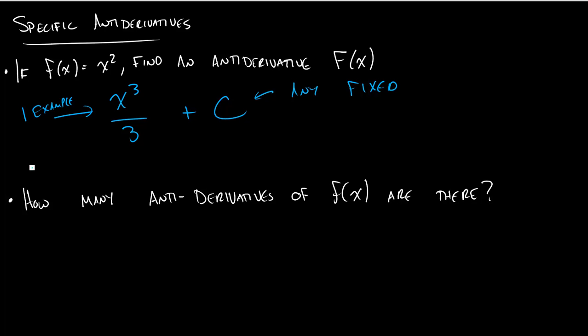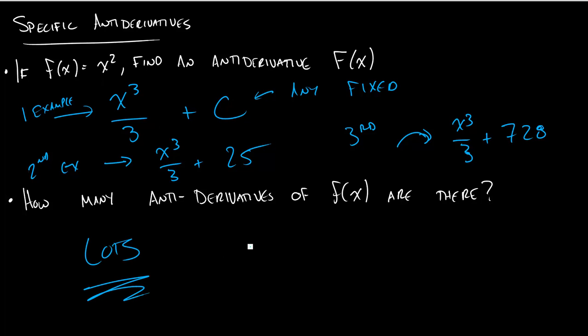But another antiderivative could be where we figure out what that c is. Maybe it's 25. This is a function I could take the derivative of and get x squared. A third example would be x cubed over 3 plus 728. If I take the derivative of this function, I'll get x squared. So how many antiderivatives of f of x are there? There's lots. There is actually infinity.